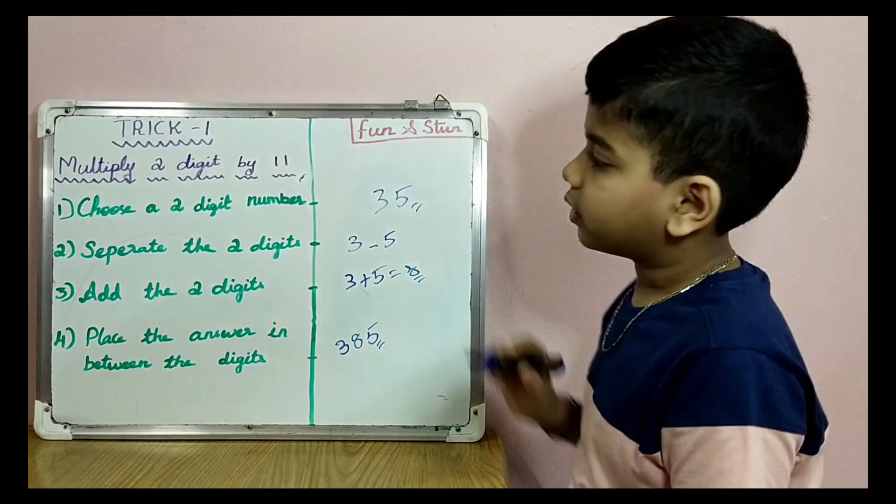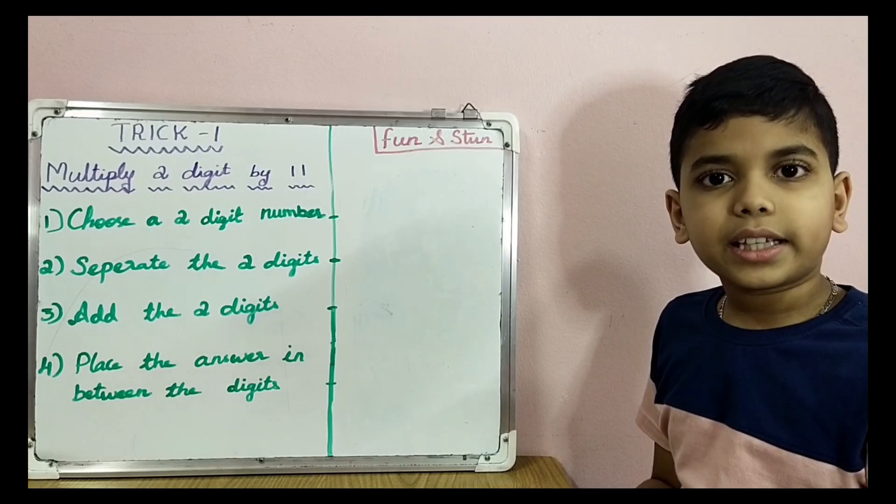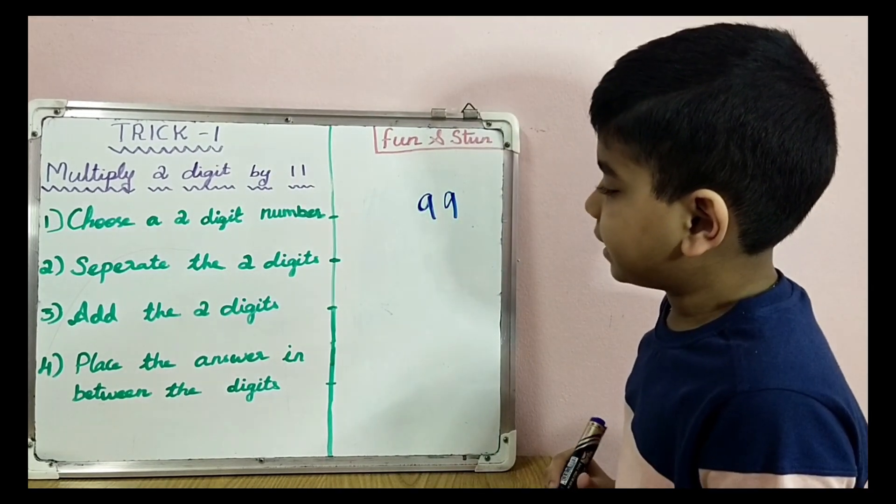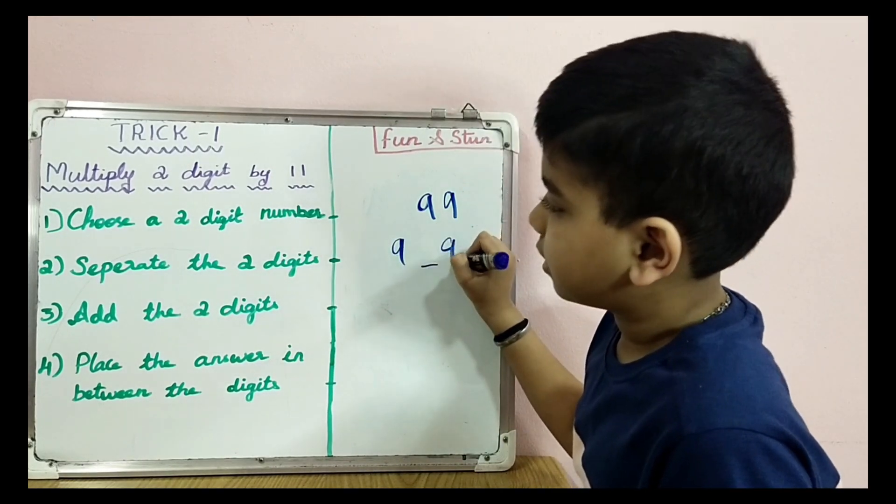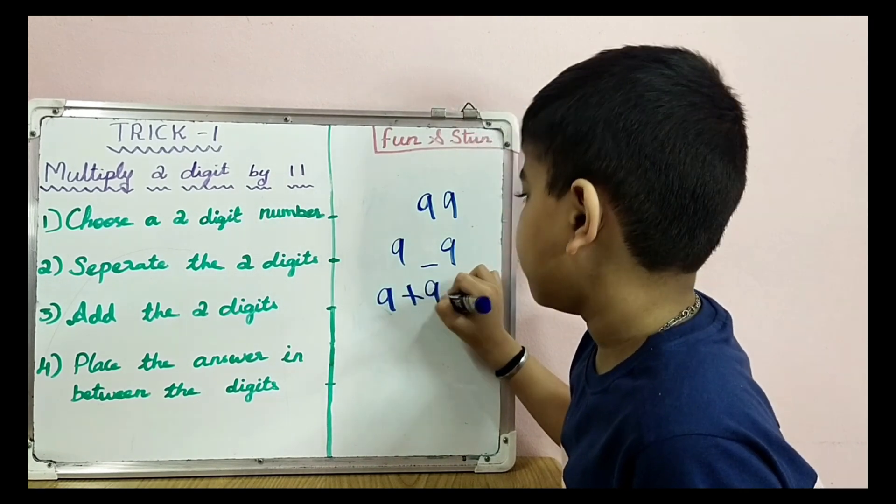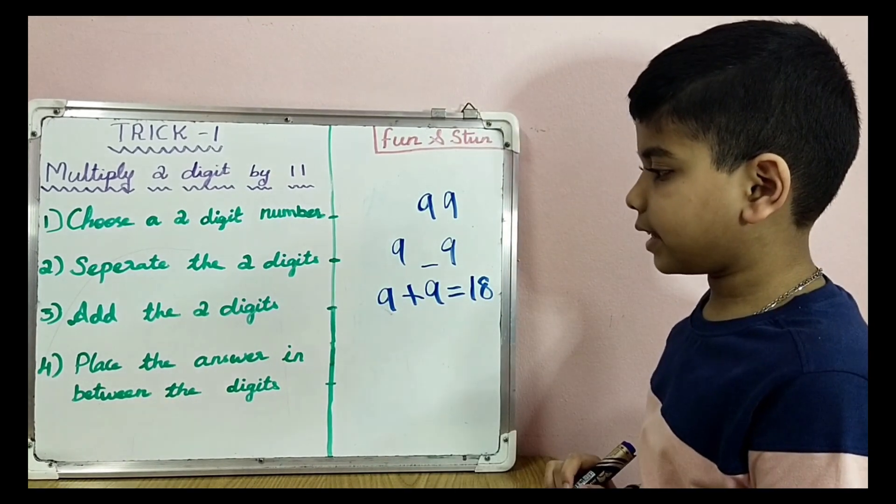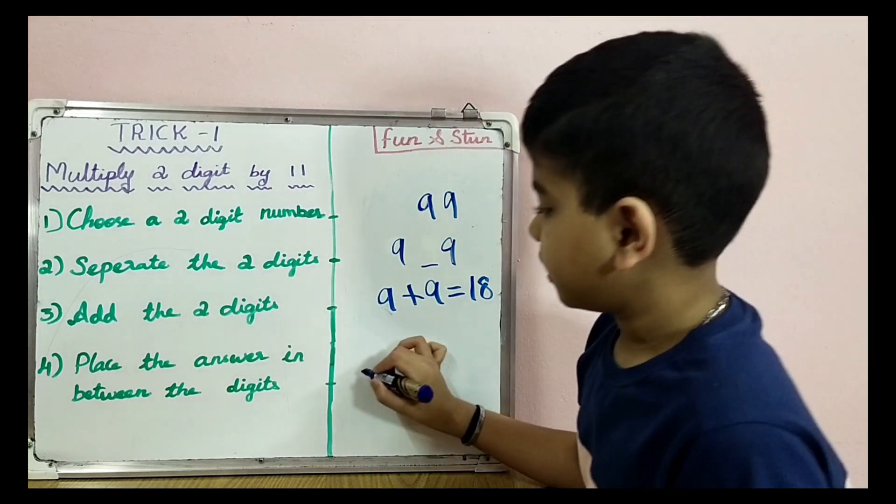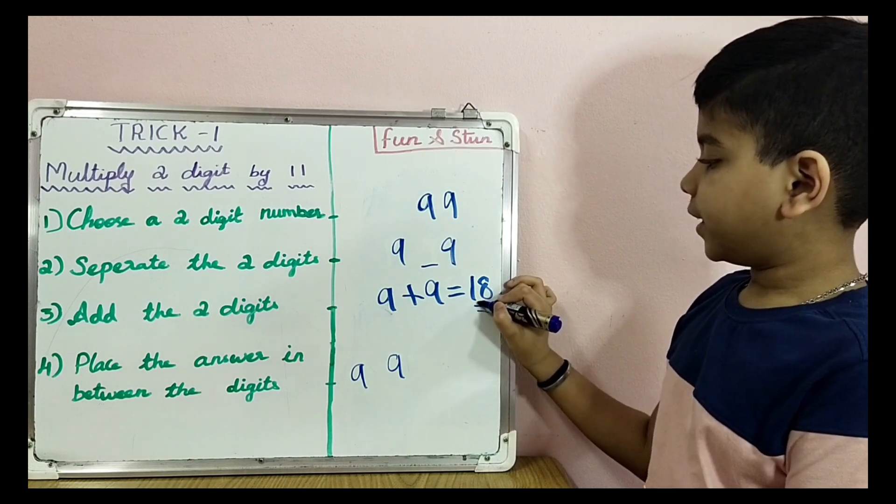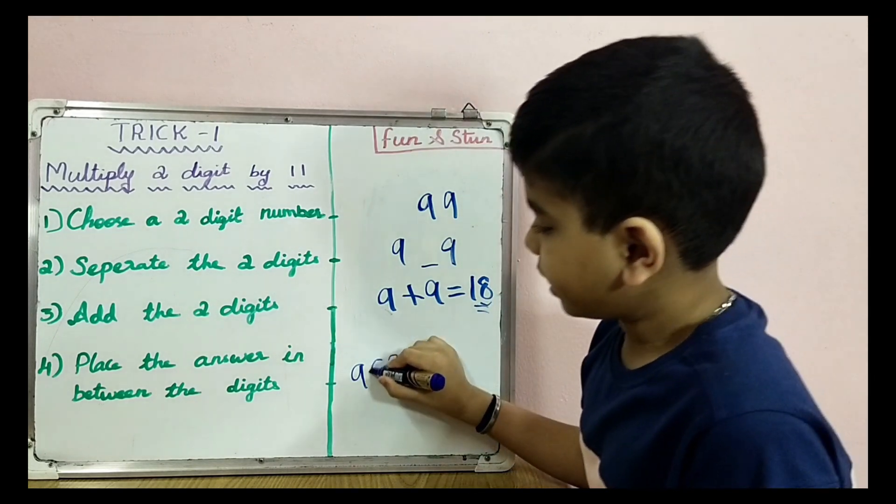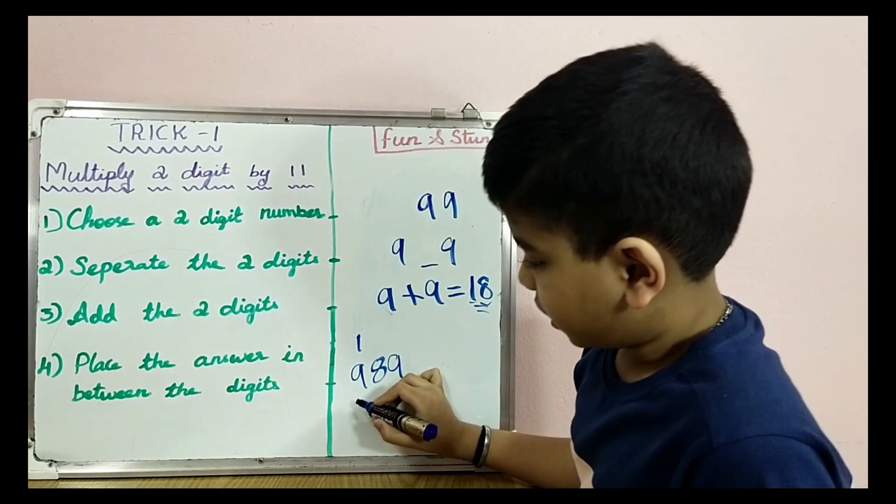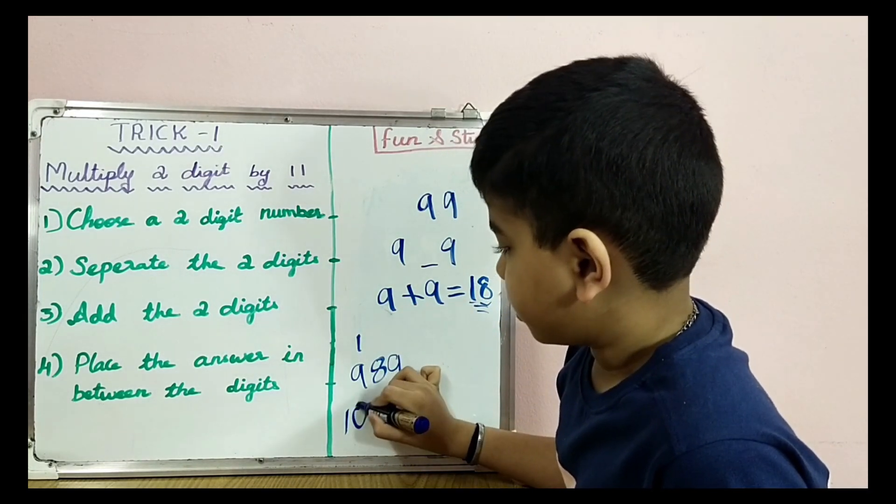Let's try it with the bigger number 99. Separate the two digits: 9 dash 9. Add the two digits: 9 plus 9 equals 18. Place the answer in between the digits: 9-9. If we get the answer in two digits, the digit in the ones place should be placed in between, and the digit in the tens place should be added with the first digit, so we'll get 1089. Try it with more numbers.